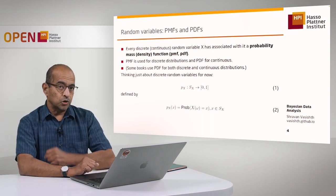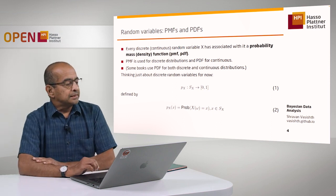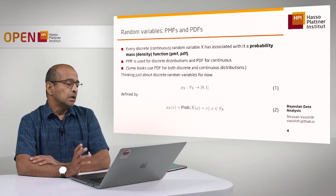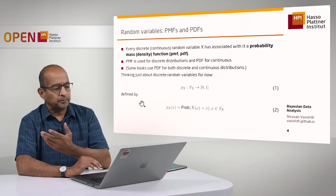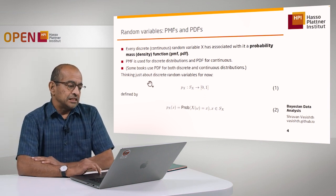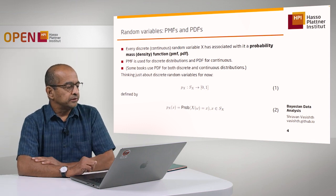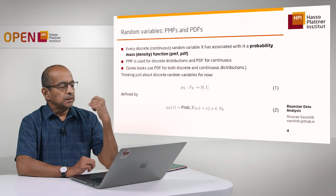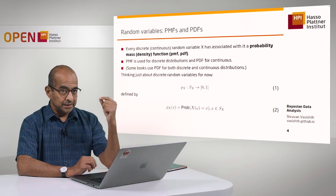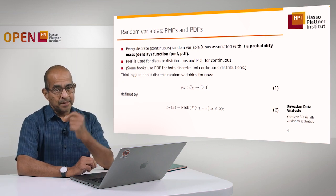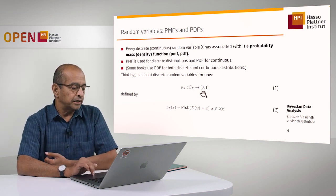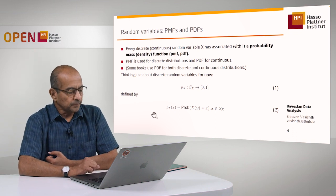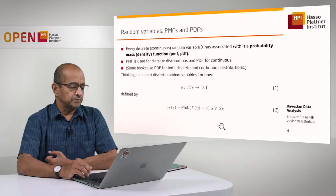What's interesting about this way of generating random outcomes is that we assign a probability to every possible outcome, and this is done through something called a probability mass function, which I will often call PMF. So in the coin-tossing example, we associate with random variable X a particular probability mass function. What the PMF does is take each numerical value in the support S of X and map it onto a probability — a number between 0 and 1. That's how I write this here in equation 1.